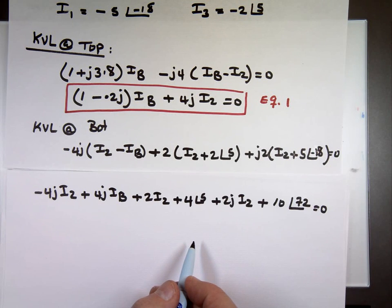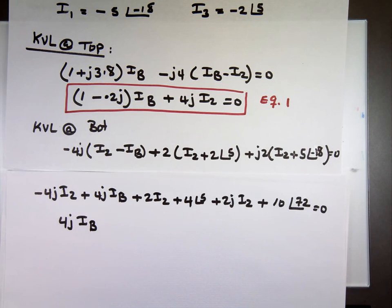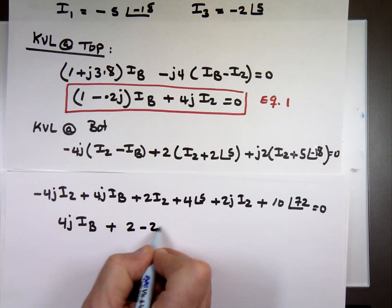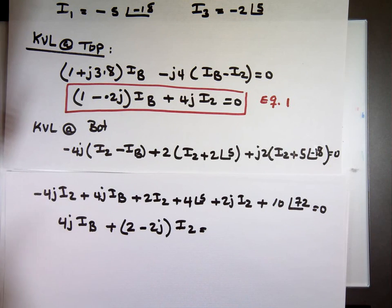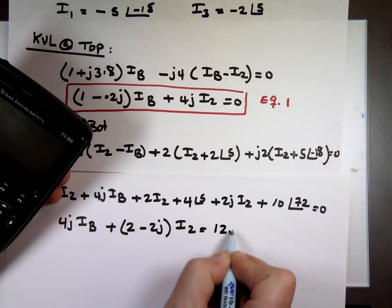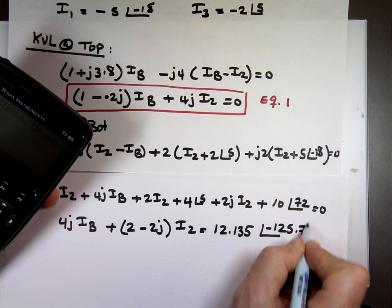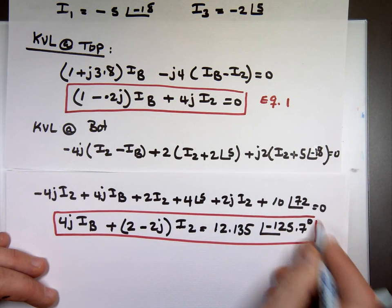So in terms of I, put I sub B first. I got to put I sub B first. That's 4J I sub B. I sub 2 I have what? Is it 2 minus 2J? That's what I got. I sub 2. I can move both of these numbers to the right side and make them a minus. Let's combine them. Negative 10 angle 72 minus 4 angle 5 equals 12.135 angle negative 125.7. And that is my second equation.